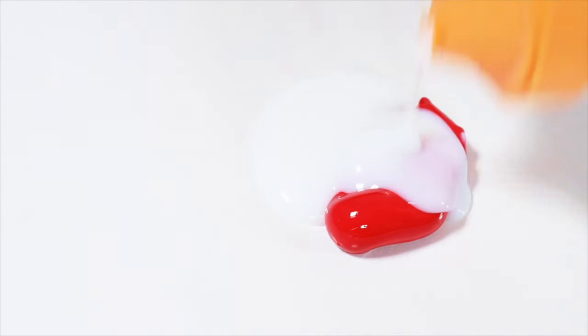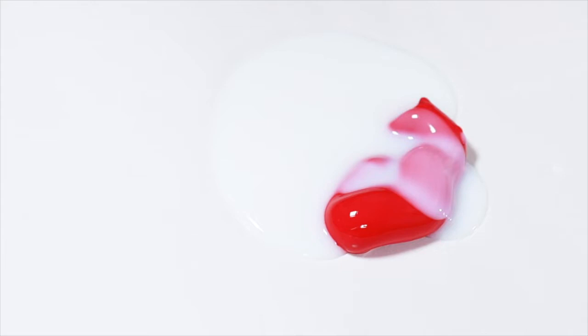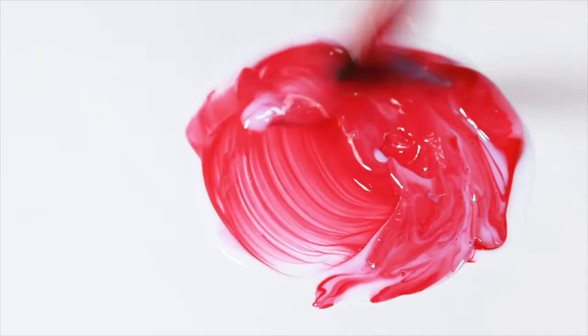For the second layer, choose a mid-tone and transparent color. In this example we use Permanent Rose, which is a beautiful pink made with pigments PR122 and PV19. Mix the paint on the palette with the Galleria Gloss Medium and then apply a transparent glazing layer on top of the light background color.